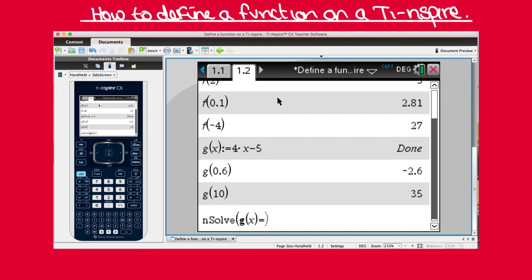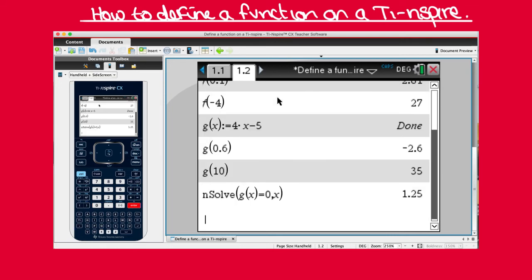equals 0. So we have just solved G(X) = 0, and our answer is 1.25.